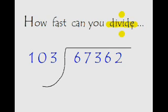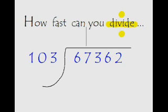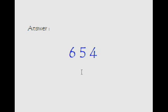How fast can you divide 67362 by 103? You have ample idea how to do it, so give it a try. I'm giving you 10 seconds — your time starts now. Your time is up. The correct answer is of course 654.